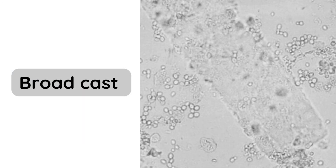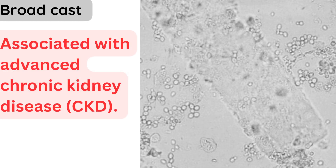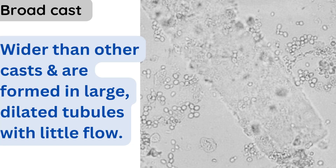Seventh: broad casts. These are linked to advanced chronic kidney disease. Broad casts are wider than other casts and form in large, dilated tubules with reduced flow.